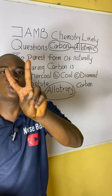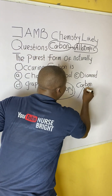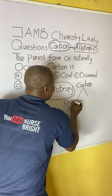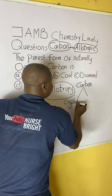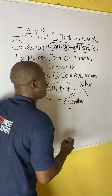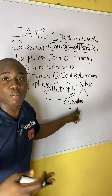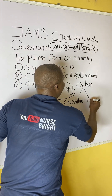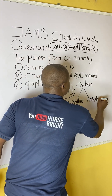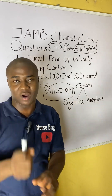Carbon exists majorly in two allotropic forms, which are the crystalline allotropic form of carbon and the amorphous allotropic form of carbon.